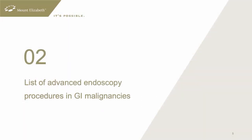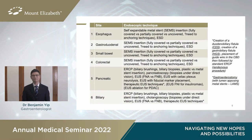What are the list of procedures that one can do in GI malignancies endoscopically? Typically, we divide the gut into luminal structures from the esophagus down to the colorectum and then the solid organs. Likewise, for advanced endoscopic procedures in malignancy, you can divide them out in the same way. For the luminal structures,